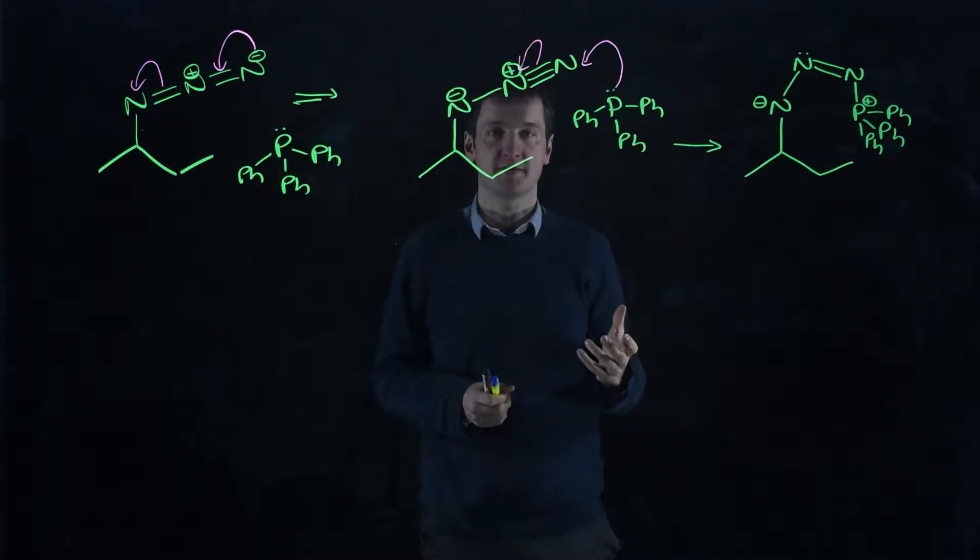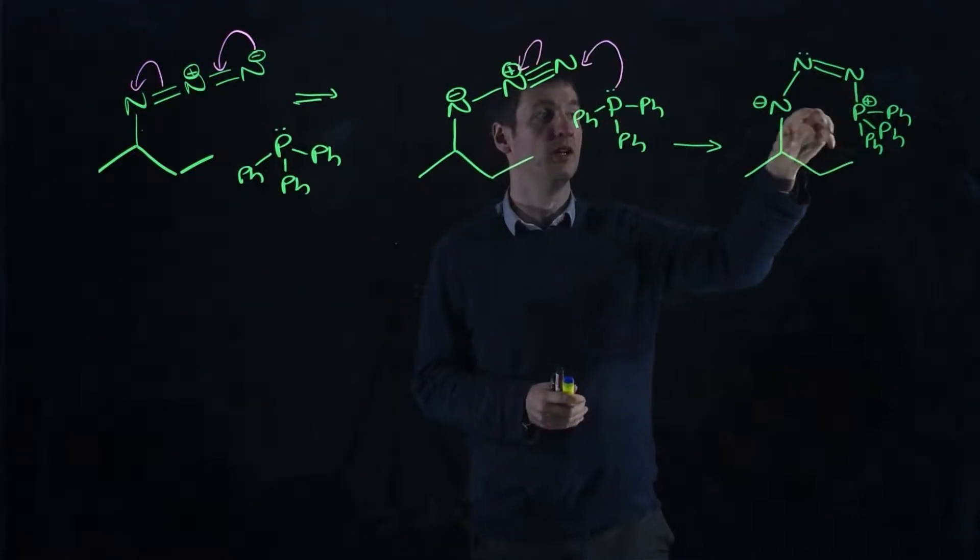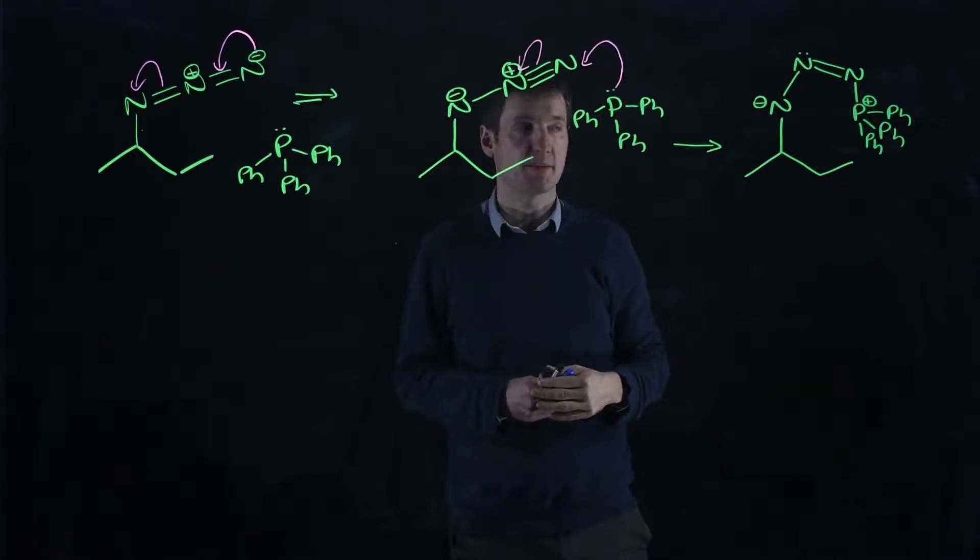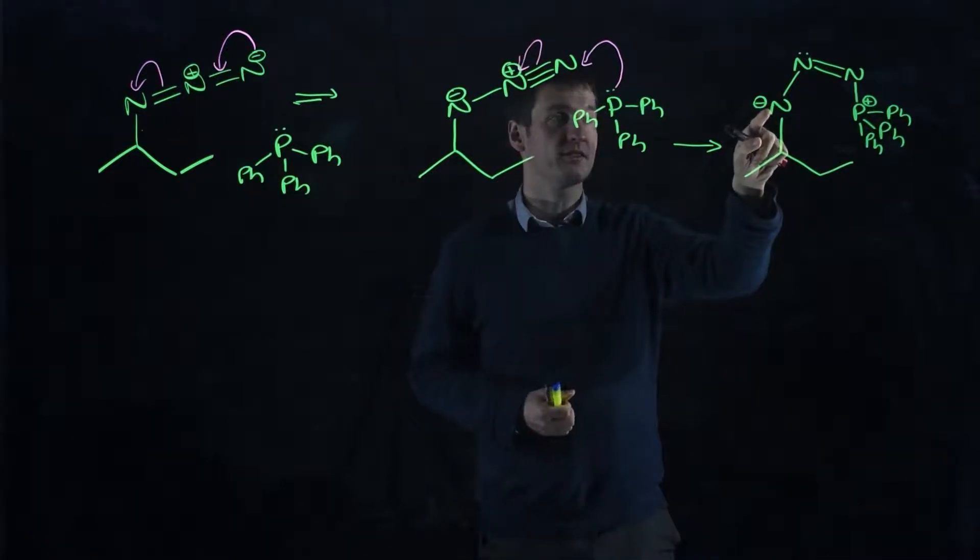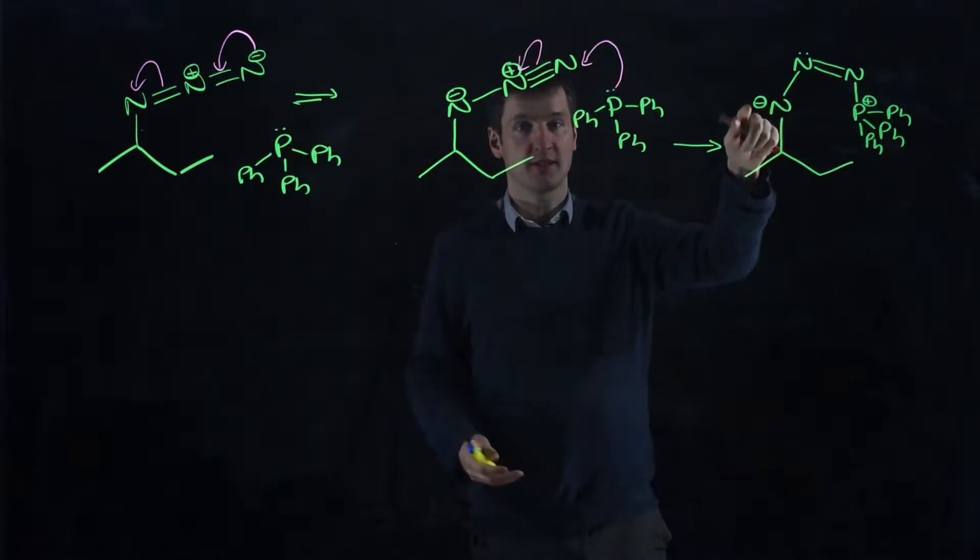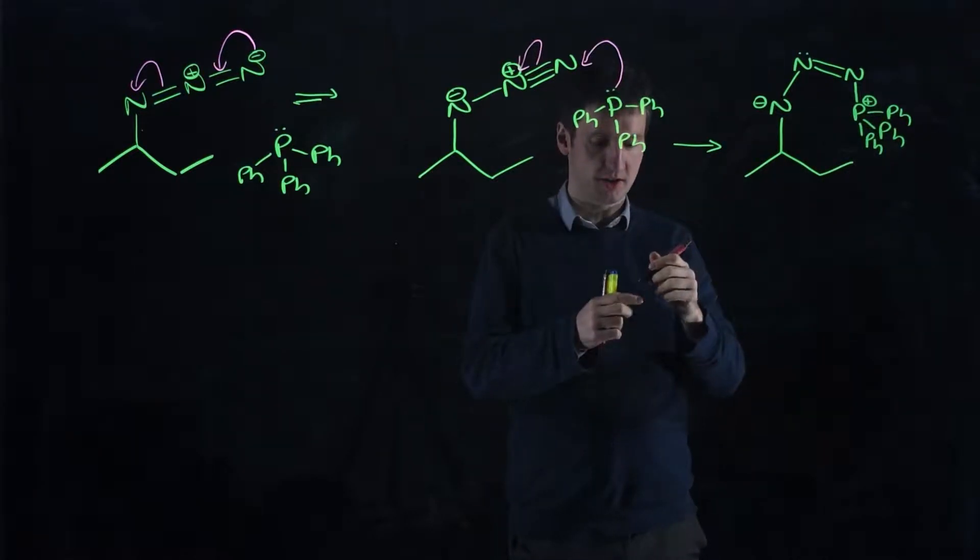Well, what do we know about phosphorus? There it is in this molecule. Phosphorus is the row below nitrogen, so it's directly below nitrogen in the periodic table. So it's not constrained to only being able to form four bonds. And here's nitrogen with an extra pair of electrons, or a negative charge on it. It's got two lone pairs. And here's phosphorus with a positive charge on it.